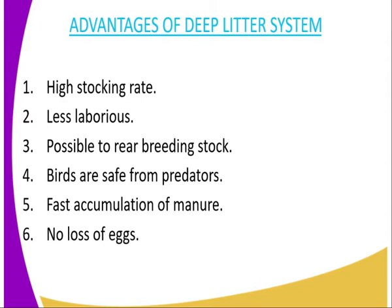Number five, fast accumulation of manure — the birds drop their droppings within the deep litter system, within the litter. After every two weeks or a month, depending on the farmer's program, the litter should be changed, and this will enhance the accumulation of manure within the system. Number six, there is no loss of eggs, because the eggs cannot be stolen as we have the nesting boxes within the deep litter system. You should provide enough nesting boxes to prevent vices such as cannibalism.